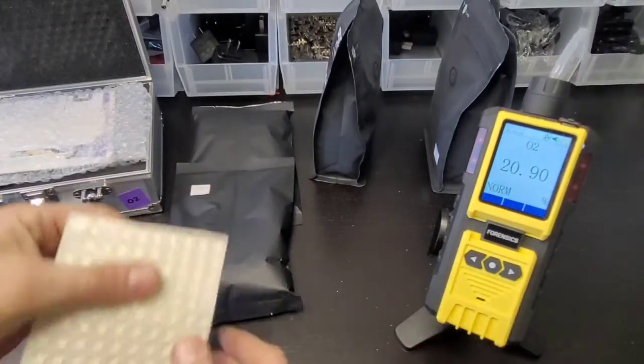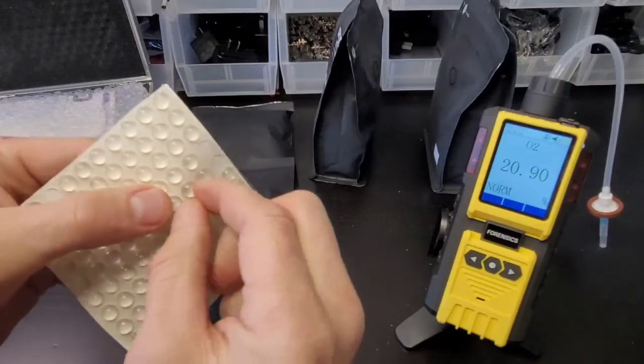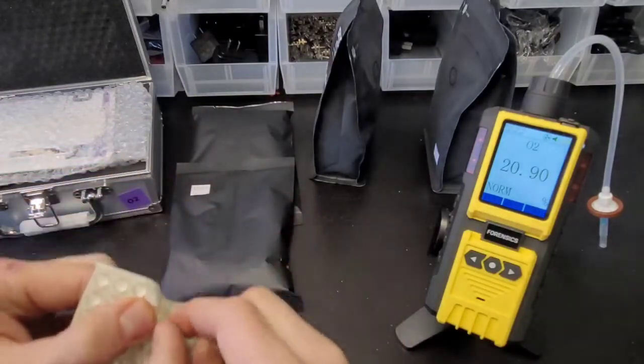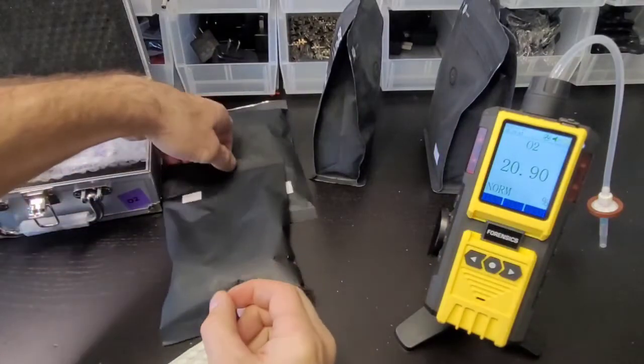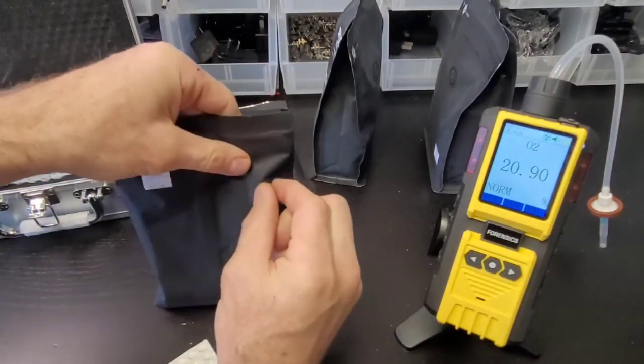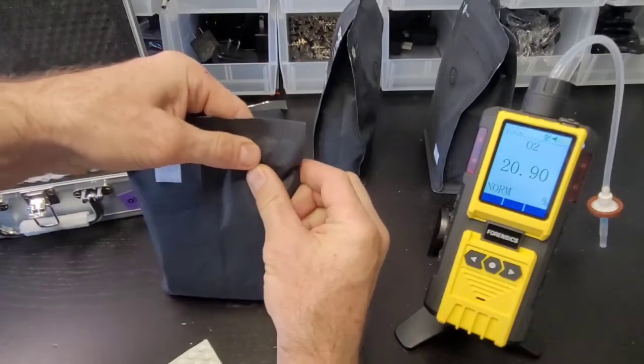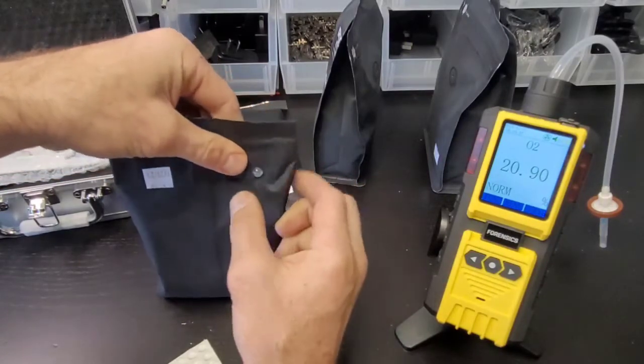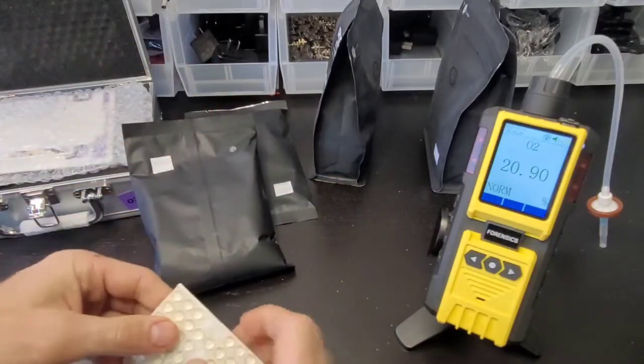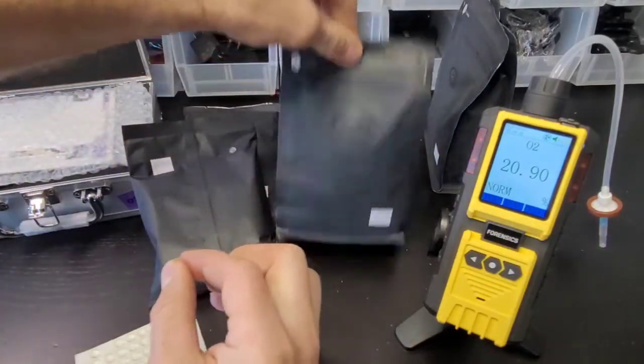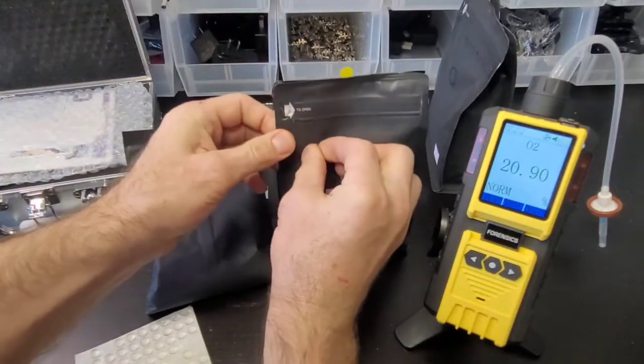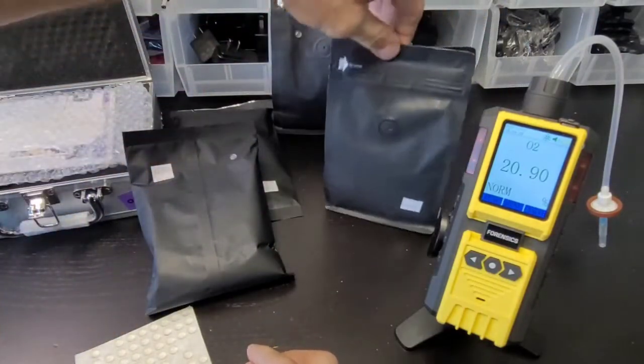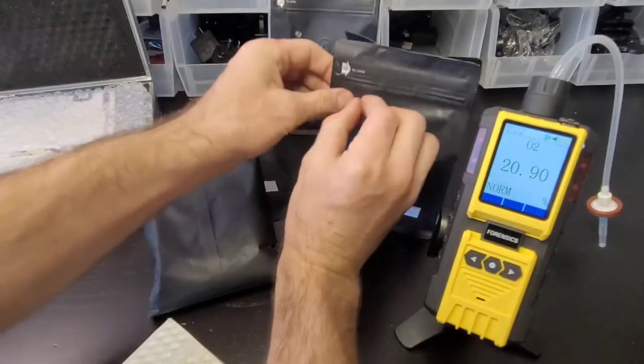These are septa - they're basically little rubber dots that are adhesive. We pop them on to the bags, the coffee bags. This is ground coffee from a special customer. Just stick them very nicely on the bags. I'm going to pop them on all these bags because we're going to be analyzing all of them.